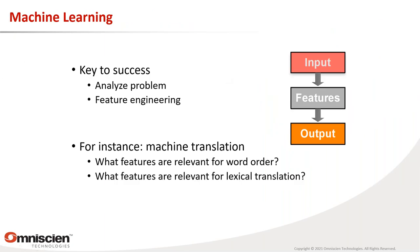Deep learning builds on machine learning where you have many examples of input-output pairs together. In the case of machine translation that is pretty straightforward — you have a source sentence and a target sentence that you want to translate between. The key success is to have a good understanding of the problem and then do feature engineering.